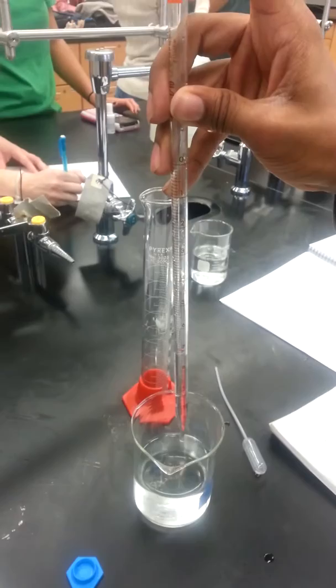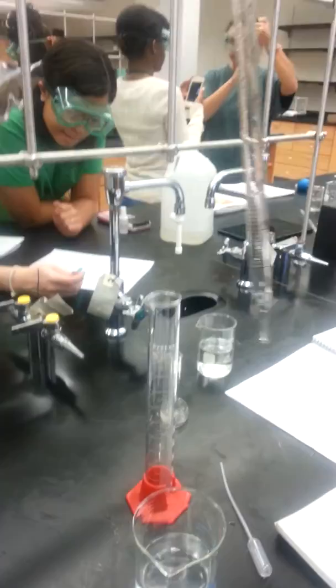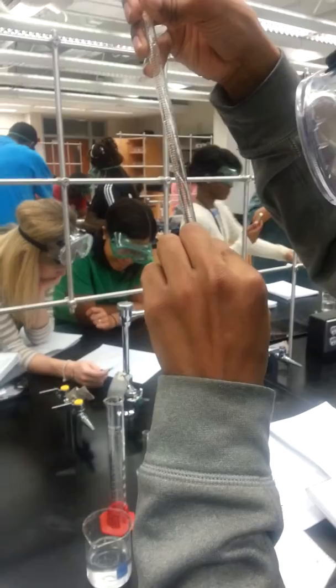And to get the bottom of the volume, you have to drain a little of the water. Take a look at the meniscus again. The bottom volume will be around 8.9 milliliters.